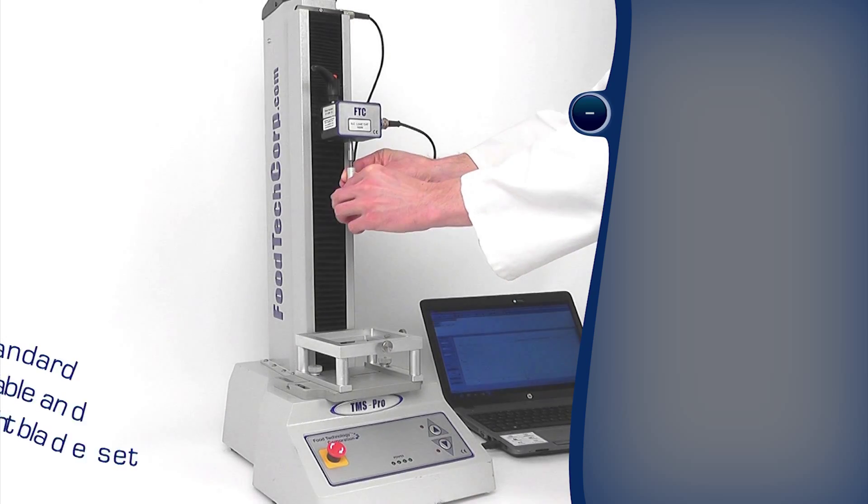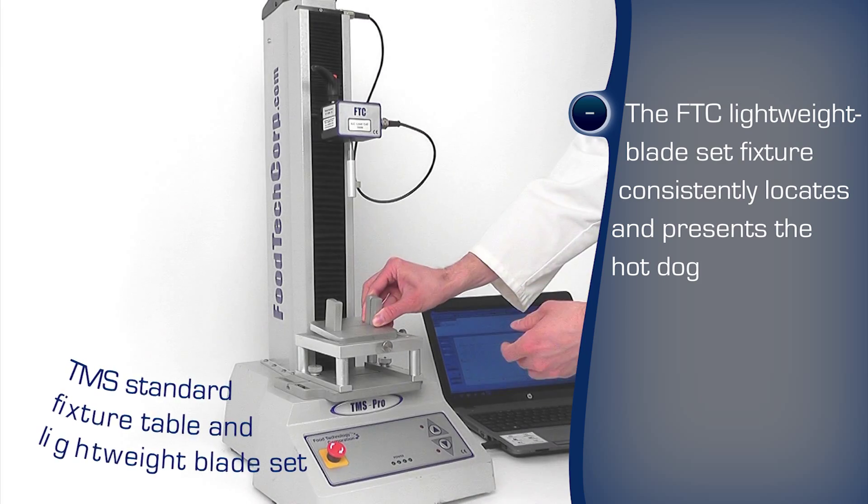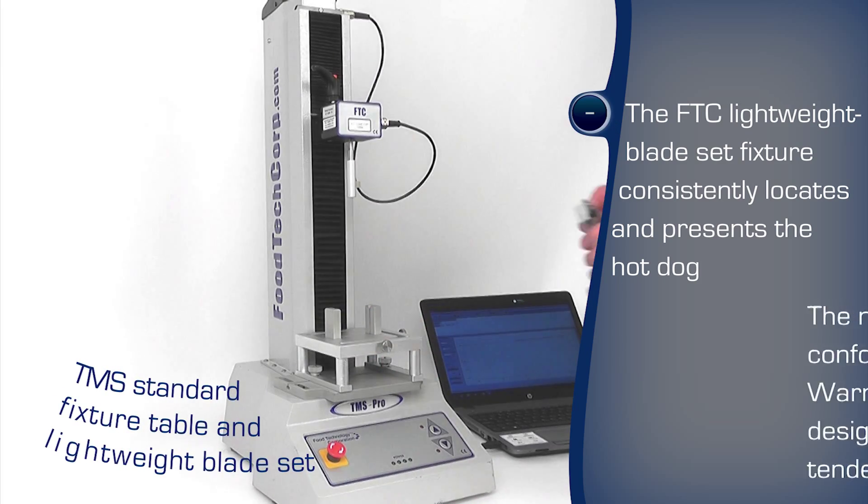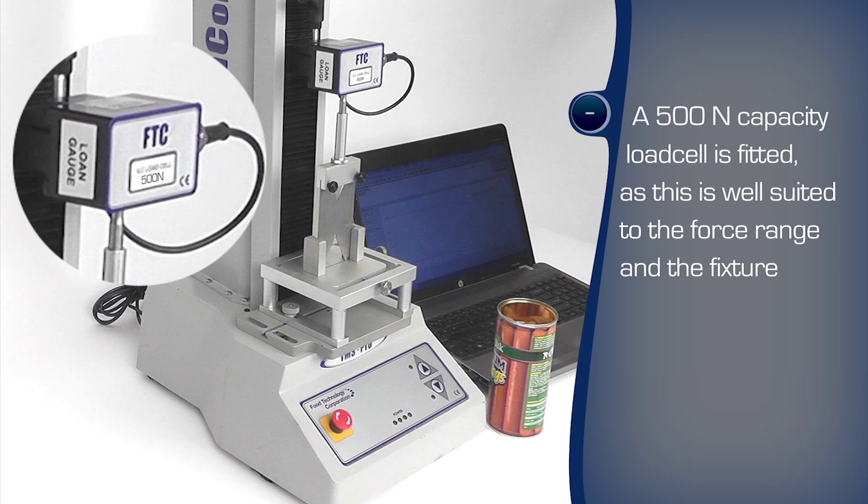The texture analyzer is fitted with the lightweight blade set fixture. The sample is placed on the flat fixture table. The notched blade ensures a consistent repeatable slice. A suitably rated load cell is used to maximize the measurement accuracy.